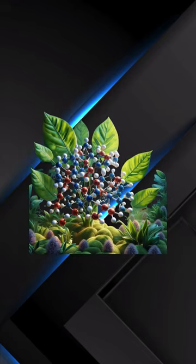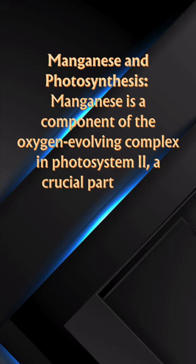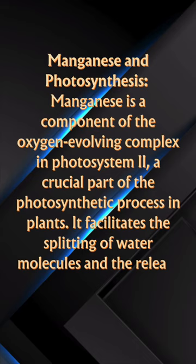Manganese and photosynthesis. Manganese is a component of the oxygen-evolving complex in photosystem II, a crucial part of the photosynthetic process in plants. It facilitates the splitting of water molecules and the release of oxygen during photosynthesis.